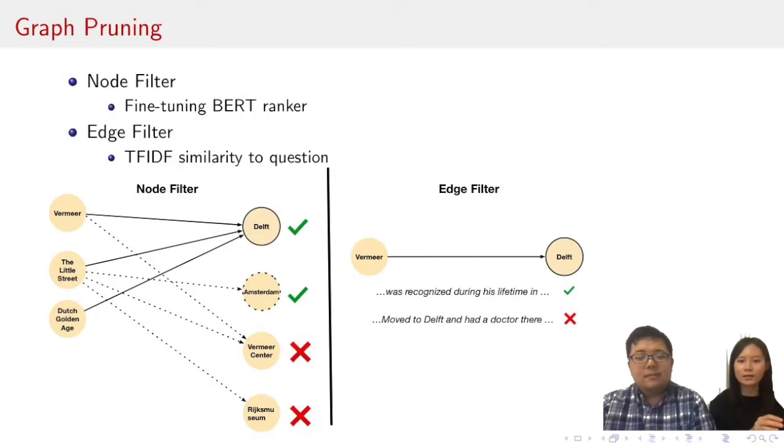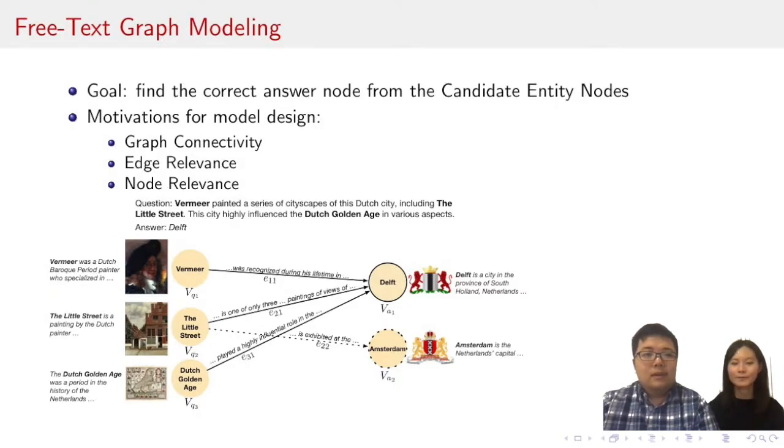With the question-related subgraph, how do we find the correct answer entity on this subgraph? Let me think about what makes the answer entity eligible. The correct answer entity would be closely tied to the question entity nodes. As we can see from the figure, the correct candidate entity node, Delft, connects to all three question entity nodes, while the incorrect candidate entity node, Amsterdam, only connects to one question node. Therefore, a correct answer node should aggregate information from multiple question entity nodes. Right, the correct answer node should be more connected to question entity nodes. So the first criteria for a correct answer node is graph connectivity.